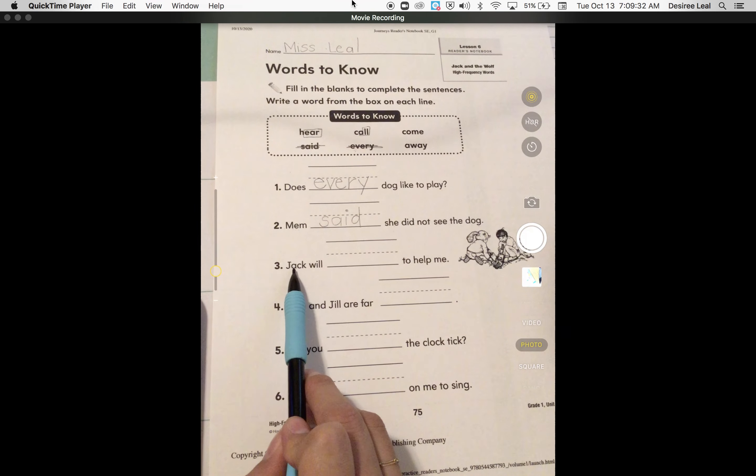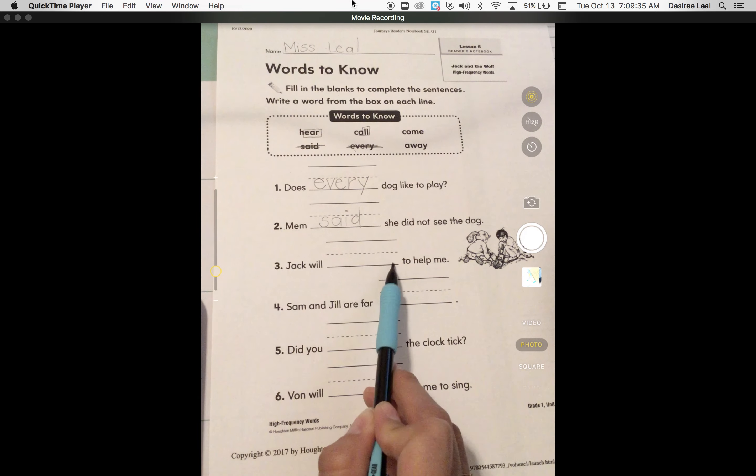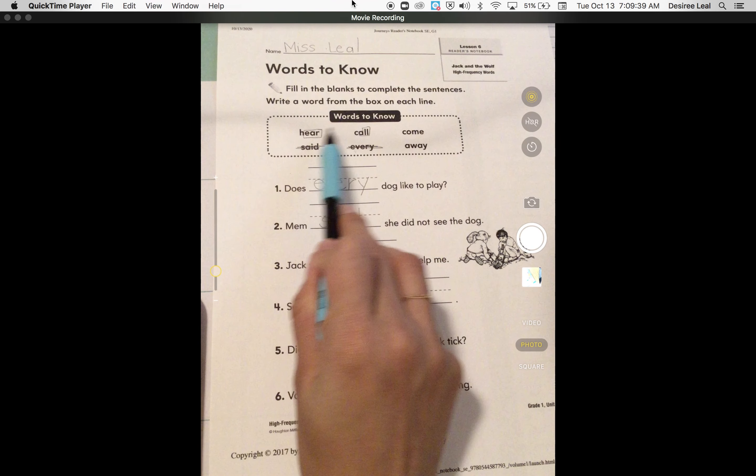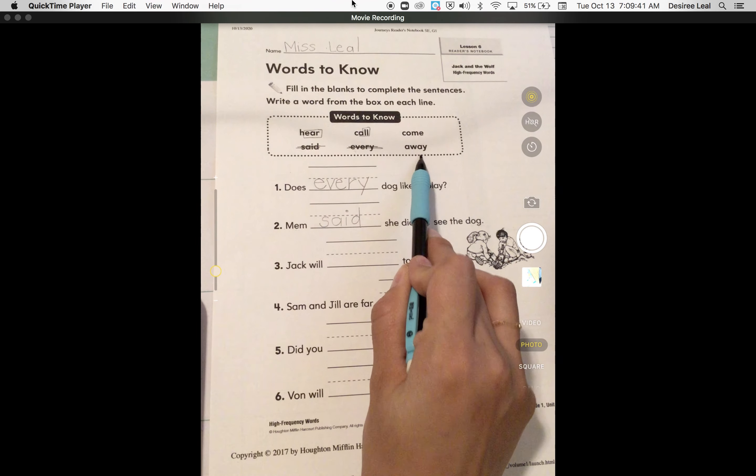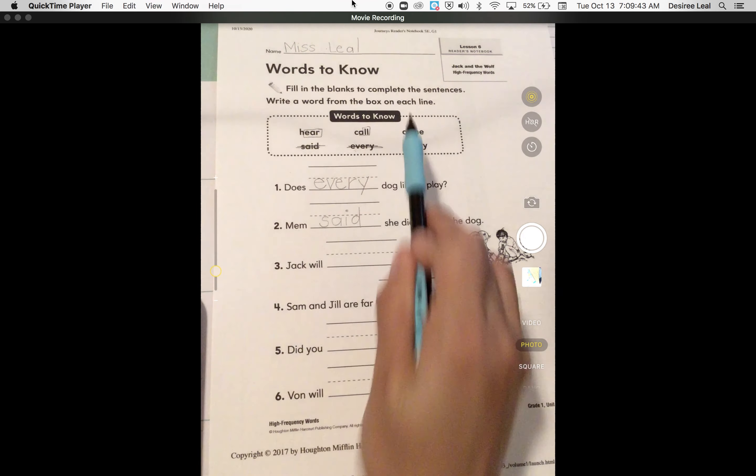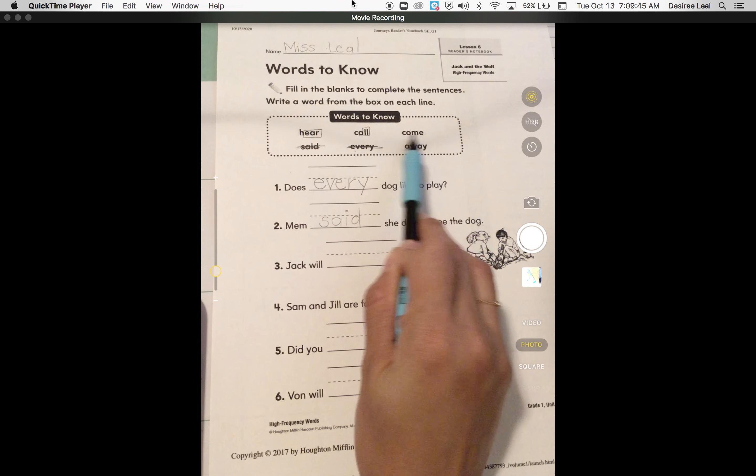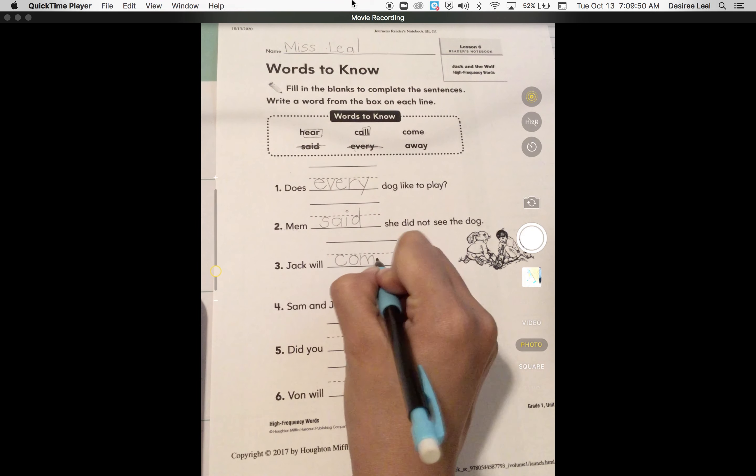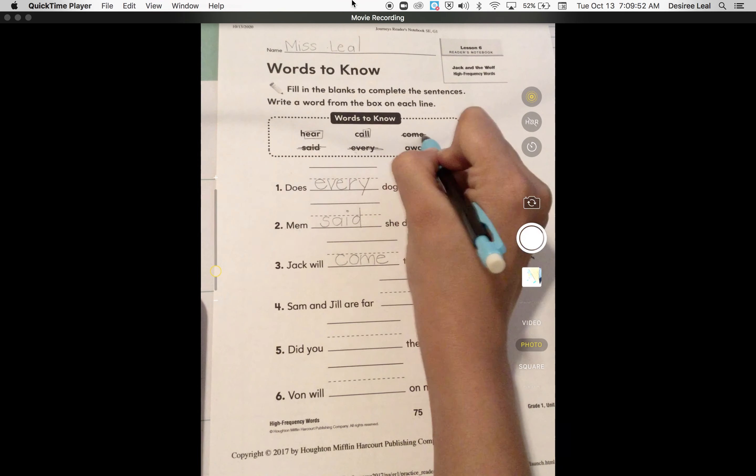Go to the next one. Jack will blank to help me. Hmm, which one do you think will make sense? Hear, call, come, or away? Jack will, yes boys and girls, come to help me. Come, C-O-M-E, come. And cross it out.